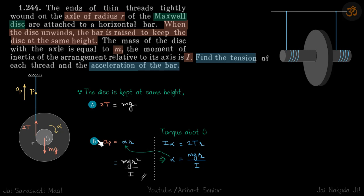So for that we are going to use the torque on the disc—that will give us alpha. About O, torque will be I·alpha equals 2T into r. And we have seen 2T is equal to mg, so this gives alpha equals mgr/I. So we'll put that value here and get our answer.